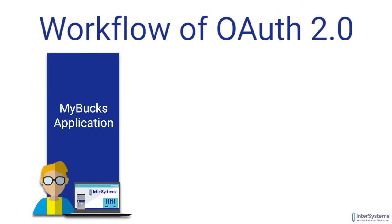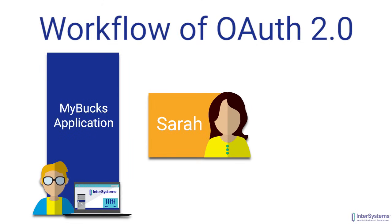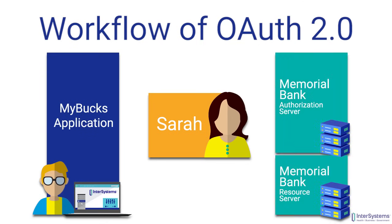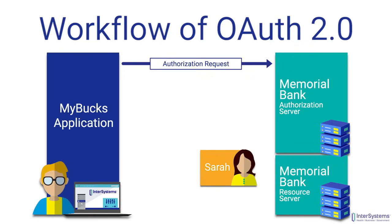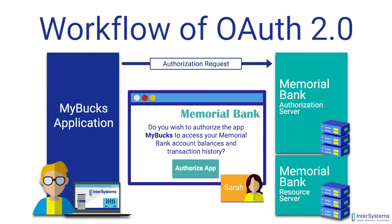So how does it actually look? Let's use John's personal finance application, MyBucks, as an example. Sarah is a user who wants to manage her finances using the dashboard views that MyBucks provides. She opens up MyBucks and wants to connect her Memorial Bank checking account to view her balances and transaction history. When Sarah clicks to connect her Memorial Bank account, MyBucks will make a request to the Memorial Bank authorization server.